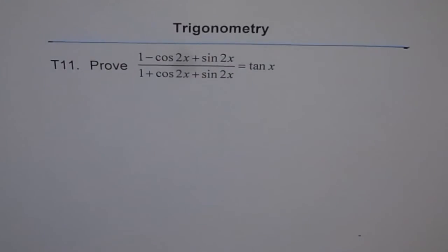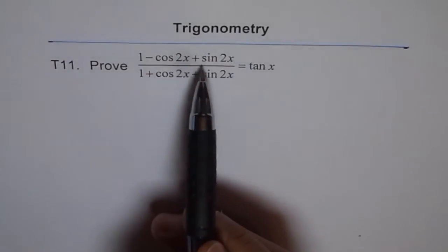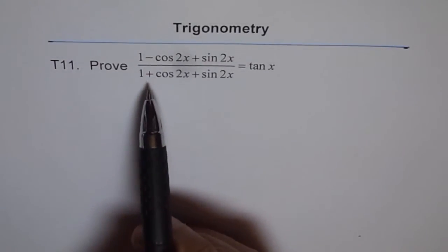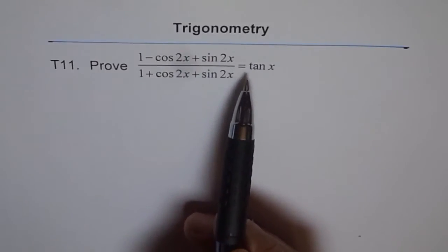Trigonometry, thinking problem 11. Prove 1 minus cos 2x plus sin 2x divided by 1 plus cos 2x plus sin 2x equals tan x.